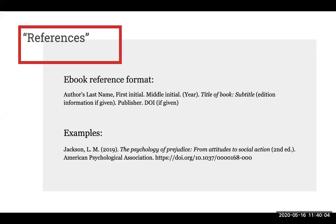Here is an example of an e-book reference with the pieces plugged in. As you can see, it includes the author's last name, their first and middle initials, the year, the title, the edition, the publisher, and the DOI. Note that when creating a reference, you should gather as many of the elements as you can, and if there is no information provided for a certain element, that's okay. Not all resources will have each element, so plug in the pieces that are available and skip the ones where no information is given.